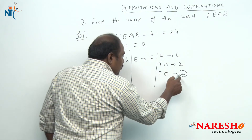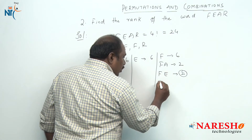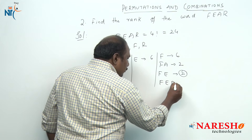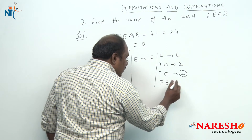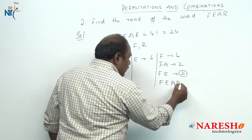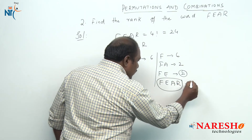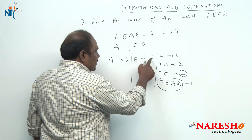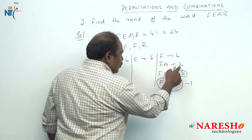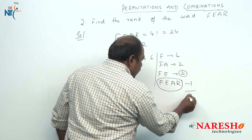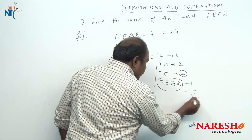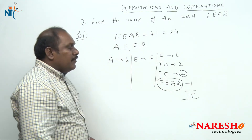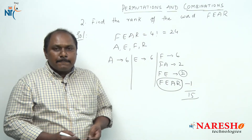In these two arrangements, according to alphabetical order, the first arrangement should be F, E, A, R — that is my word. So this is position 1 in those two. So 6 plus 6 plus 2 plus 1 gives our answer as 15. The rank of the word FEAR is 15.